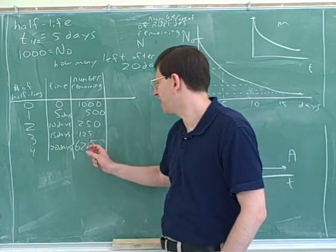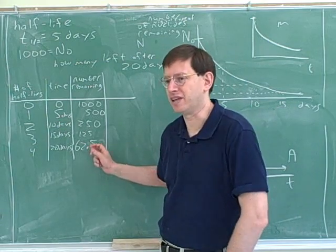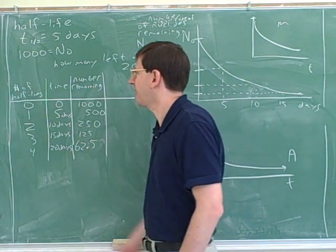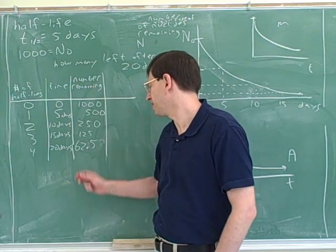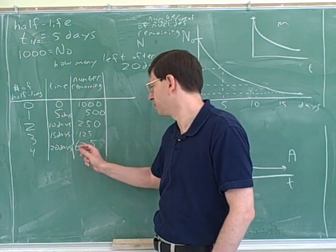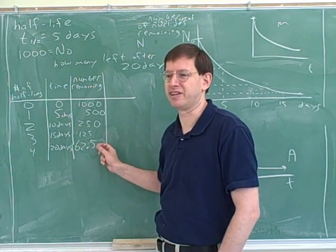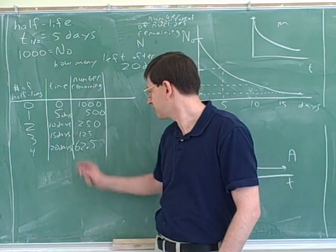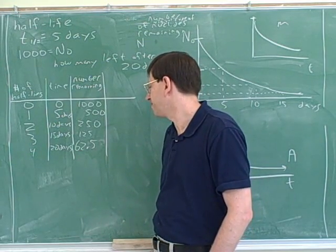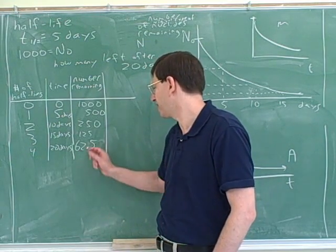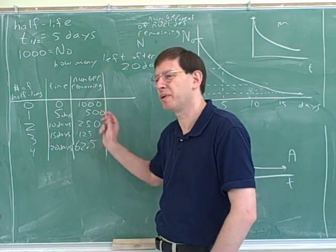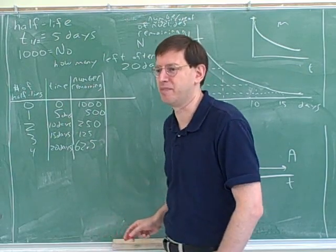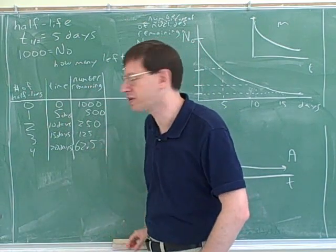It's a little weird to say that you have half a nucleus left, but maybe I should have said that we started with, say, a thousand million. So now we would be left with 62.5 million nuclei, which makes more sense. Or you could say you're going to have 62 left with maybe a 50% chance of having one more. We don't need to worry about the exact meaning — the more important thing is how to figure out these numbers.